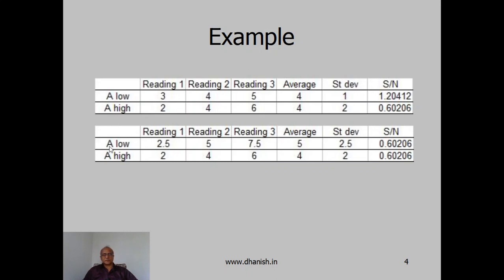Suppose in another case, for A low, we got the readings 2.5, 5 and 7.5, resulting in an average of 5 with standard deviation of 2.5, signal to noise ratio is 0.6. And when A was high, we got readings 2, 4 and 6, resulting in an average of 4 and standard deviation of 2. Therefore, signal to noise ratio remaining again 0.6. Now, signal to noise ratio is equal, but the average is higher at A low and standard deviation is lower at A high.